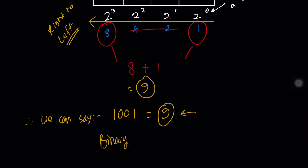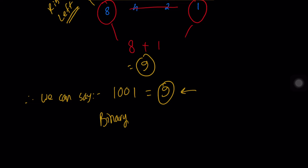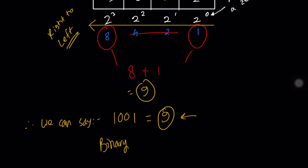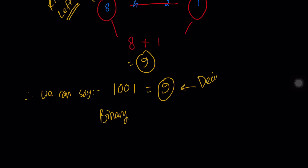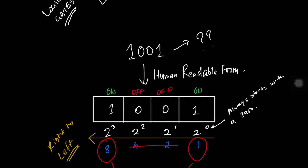So the computer reads the value as 1001, whereas we read the value as nine. The number nine is what we use when talking to someone — like 'you have to buy nine eggs'. This number that humans can easily read is actually called a decimal or denary number. We're going to talk about denary numbers in more detail in just a bit.